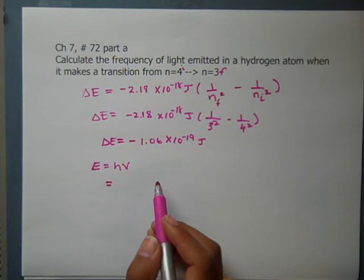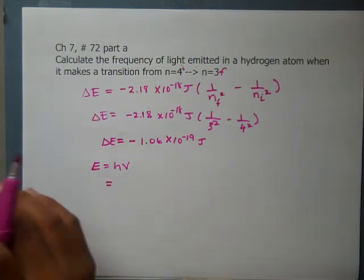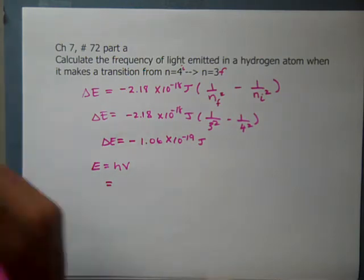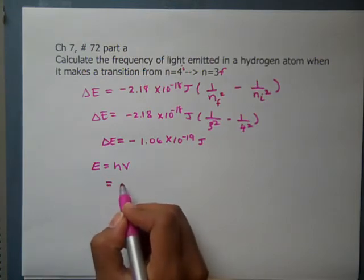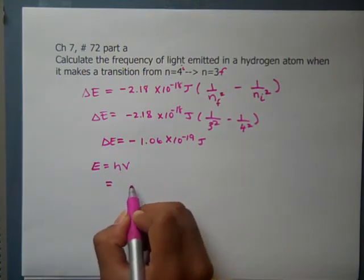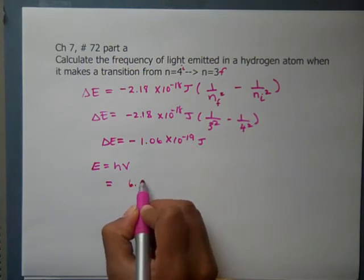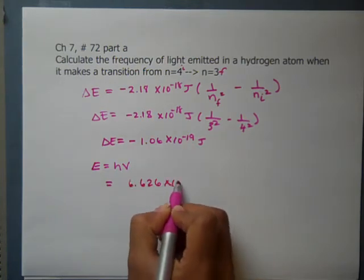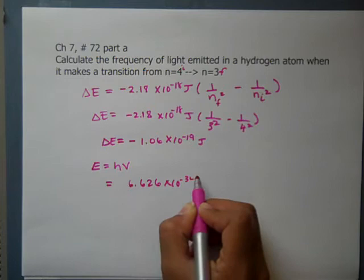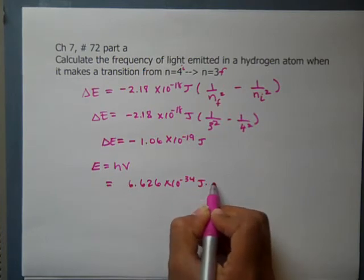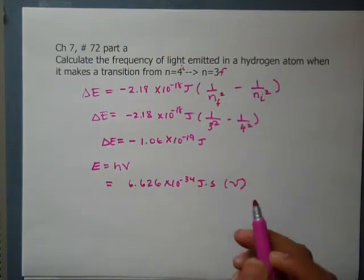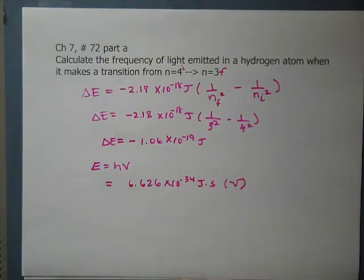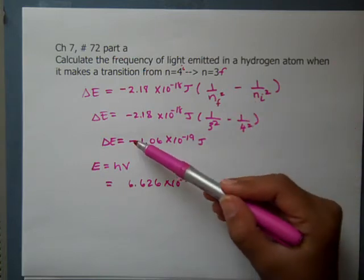Our E is what we solved for above, but let's plug in h and frequency first. Our h is 6.626 times 10 to the negative 34 joule seconds times our frequency. The trick is you can't have a negative frequency.